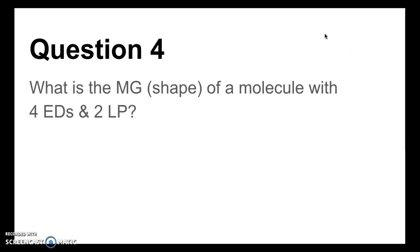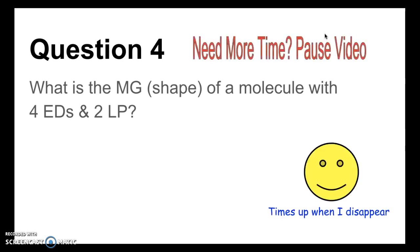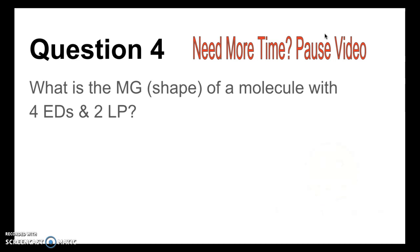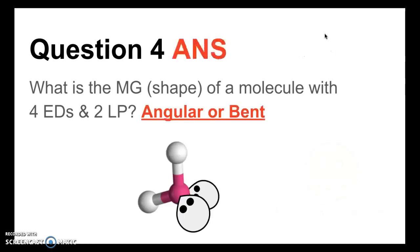Question 4: What is the molecular geometry or shape of a molecule with four electron domains and two lone pairs? The answer is angular or bent. Once again, for the molecular geometry or shape, we ignore the lone pairs and focus on just the arrangement of the bonds. So if we erase those lone pairs, we can more clearly see the angular or bent shape.